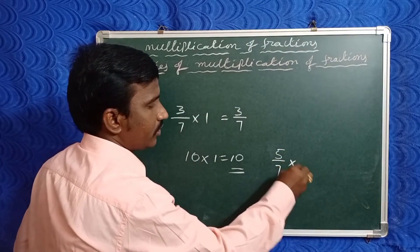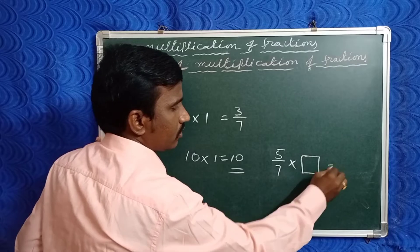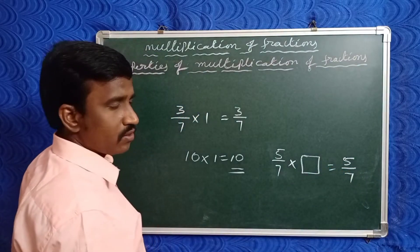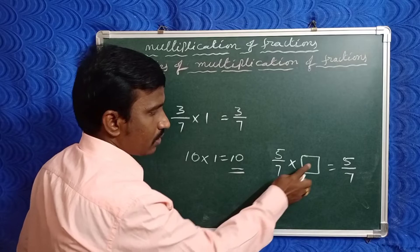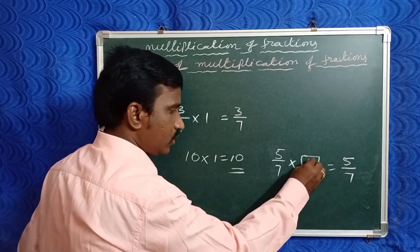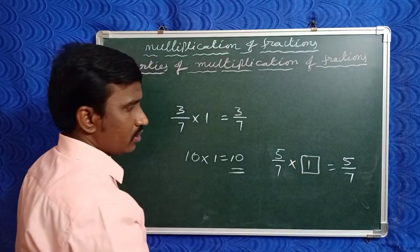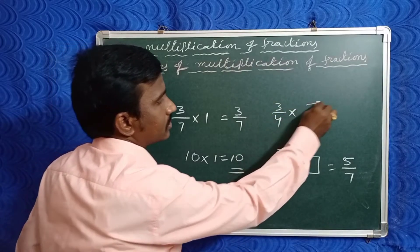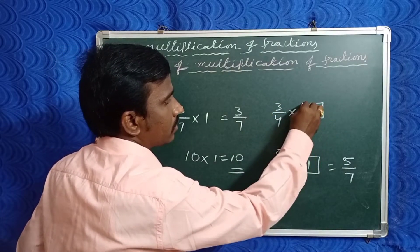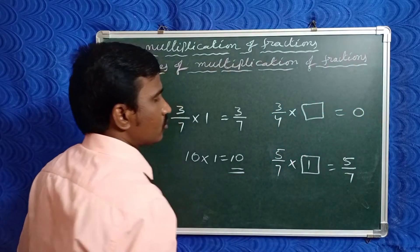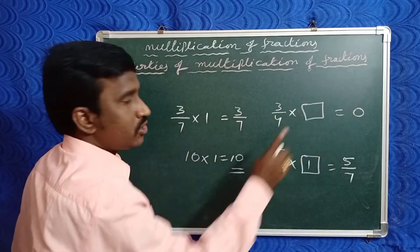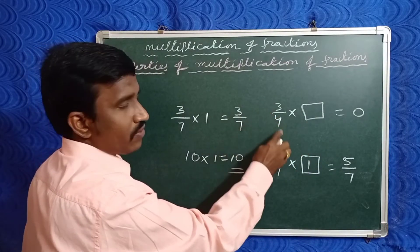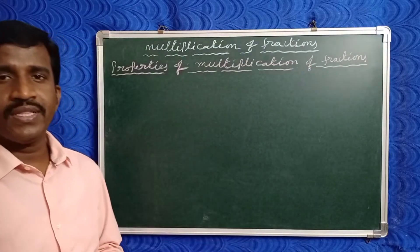For example: five by seven into which number will give the same number again? Five by seven into one equals five by seven. Similarly: three by four into some number equals zero — which number multiplied into three by four gives zero? That number is zero.